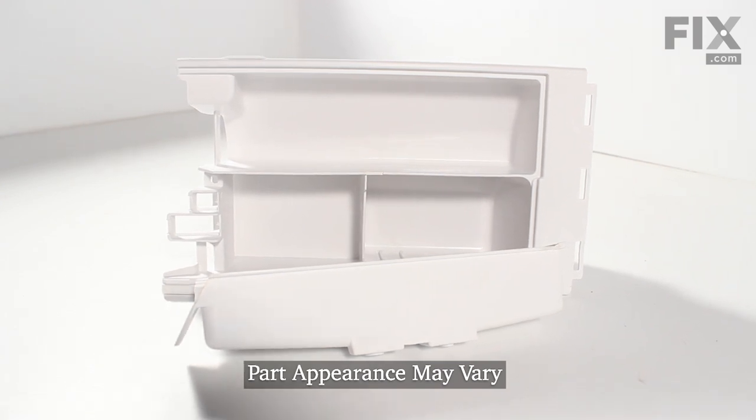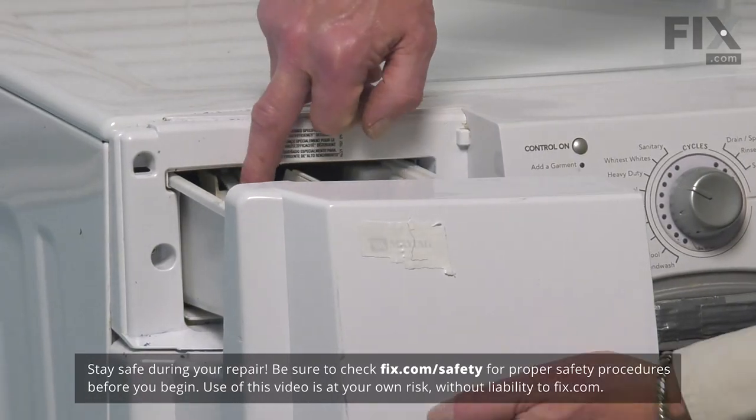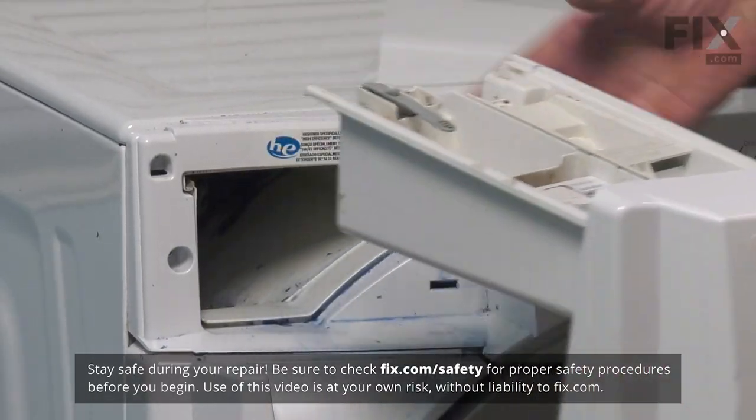Now, to replace the detergent drawer on this machine, we'll start by pulling the old one forward to press the release tab to slide it completely out of the cabinet.